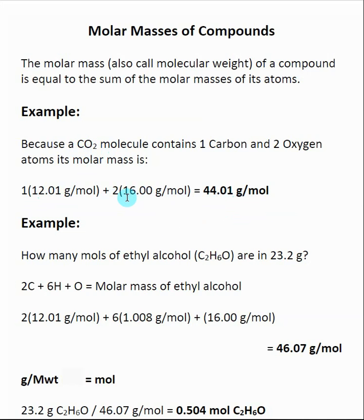So remember, even though here we're talking about individual elements, those numbers that are on the periodic table in terms of weight are actually the units of grams per mole. So when I add these together, what we get is grams per mole for the overall molar mass of an individual compound.